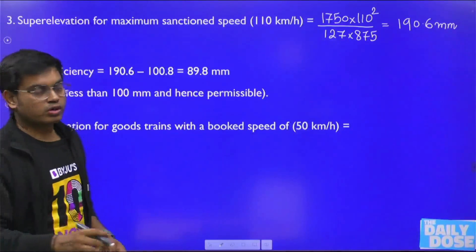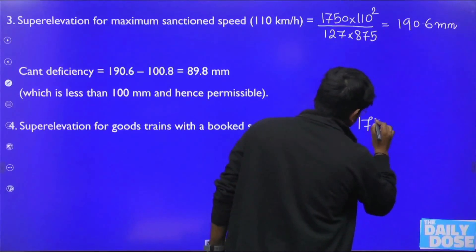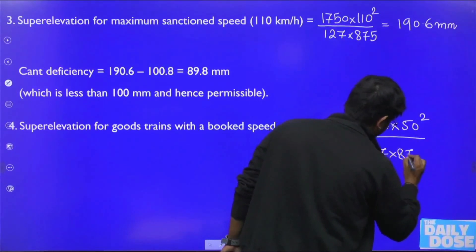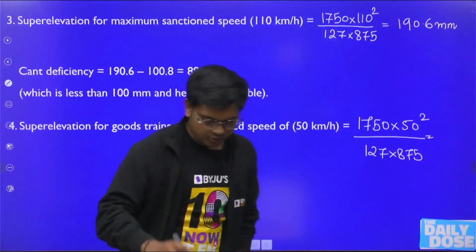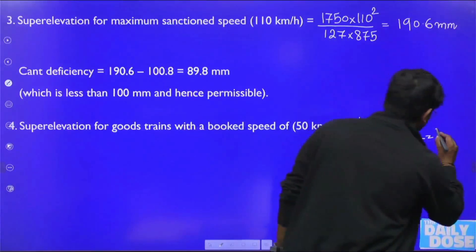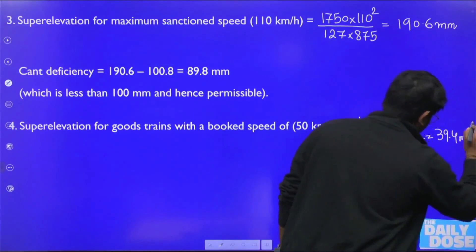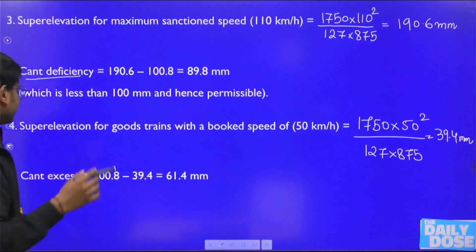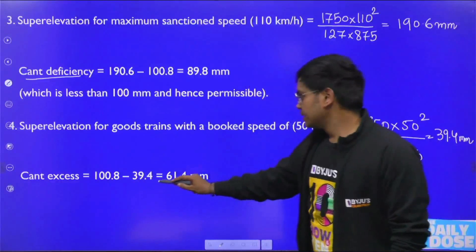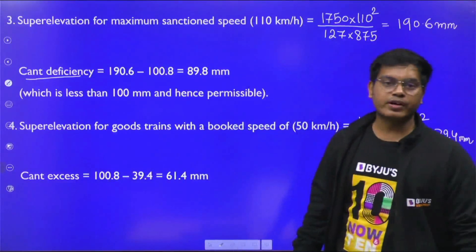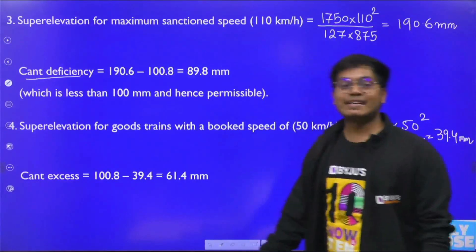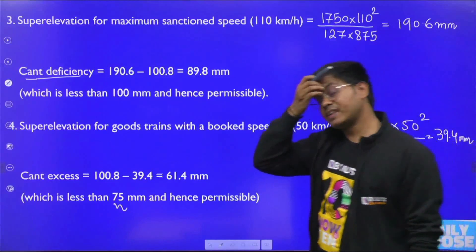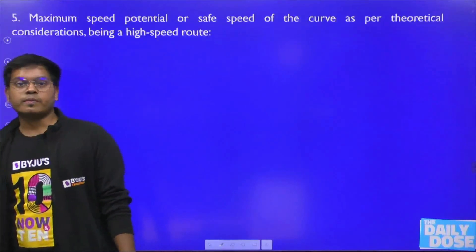Next, find the super elevation for the goods train running at 50 km/h: 1750 × 50² / (127 × 875) = 39.4 mm. The cant excess is: 100.8 − 39.4 = 61.4 mm. The limit for cant excess is 75 mm, and 61.4 mm is under the limit, so it is also permissible.